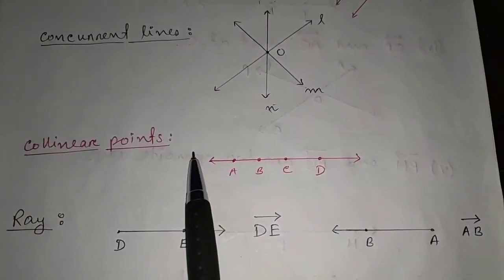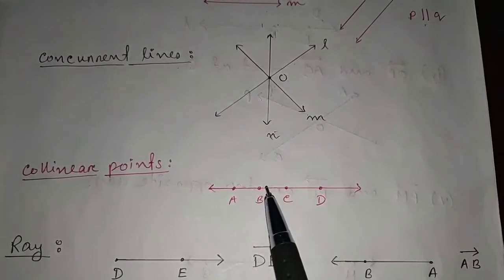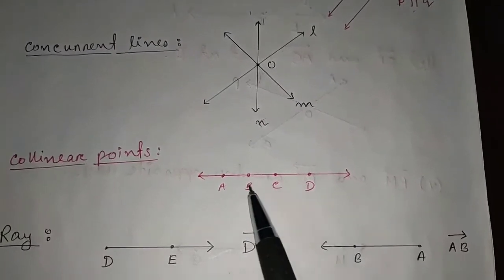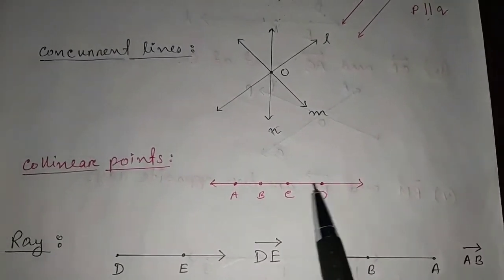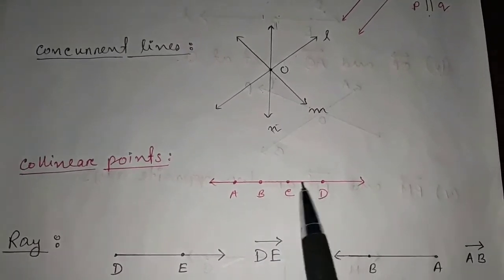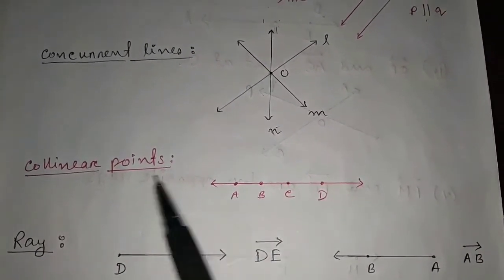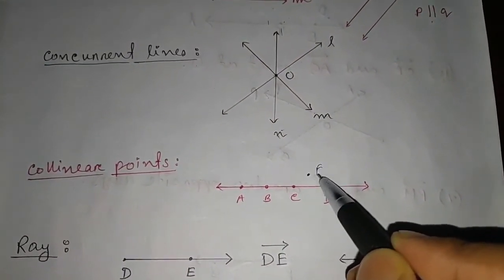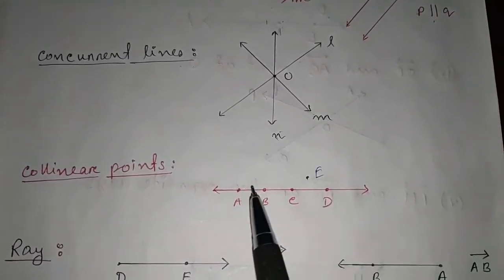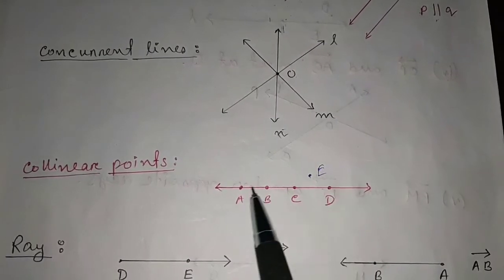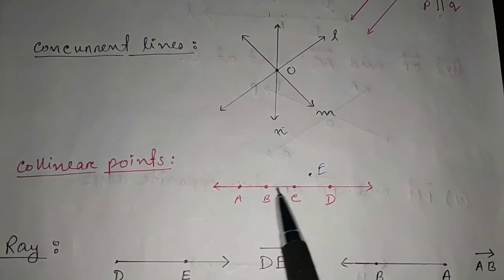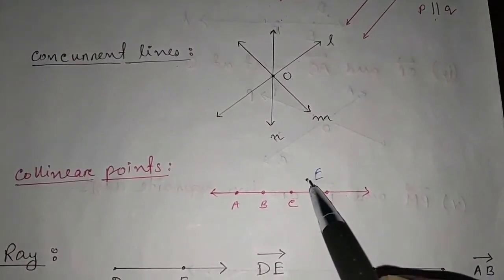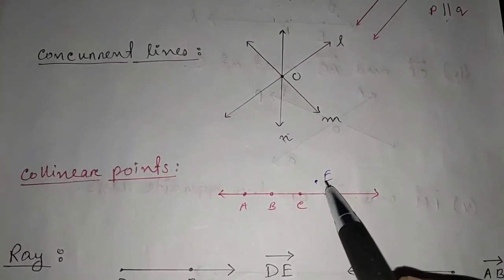Next is collinear points. Three or more points are said to be collinear points if they lie on the same line. You can see this line has four points lying on it — these are collinear points. But suppose there is another point E that is not on the line — E is not a collinear point. Points A, B, C, D all lie on the line, so they are collinear points, but E does not.